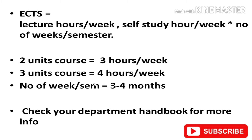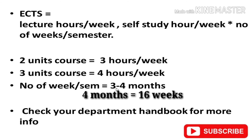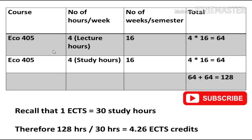Two-unit courses are usually given three hours of lecture per week, while a three-unit course is usually given four hours of lecture per week. The number of weeks in a semester is usually around three to four months. You can check your departmental handbook if you need more information.